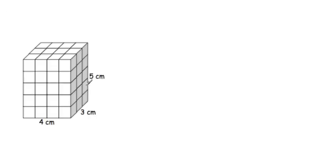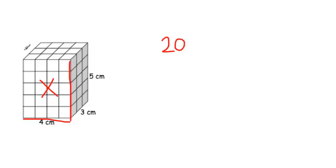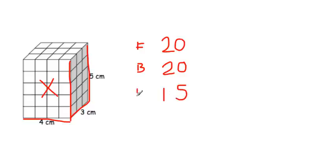Sometimes you're not going to see a net form — you're just going to see a rectangular prism already put together. In that case, you have to picture what each side would have. Looking at the front, we have a base of 4 and a height of 5, so 4 times 5 gives us 20 centimeters for the front. We know the front is exactly the same as the back, so we add another 20. Now let's go to the right side — a base of 3 and a height of 5, so 3 times 5 is 15 for the right side, and the same on the left side.